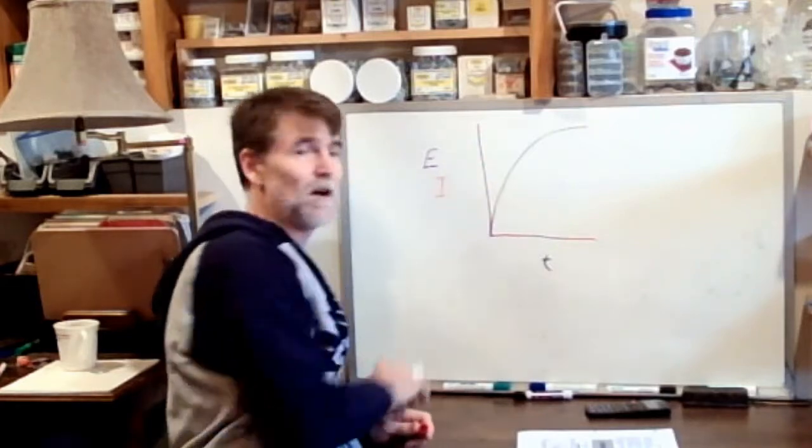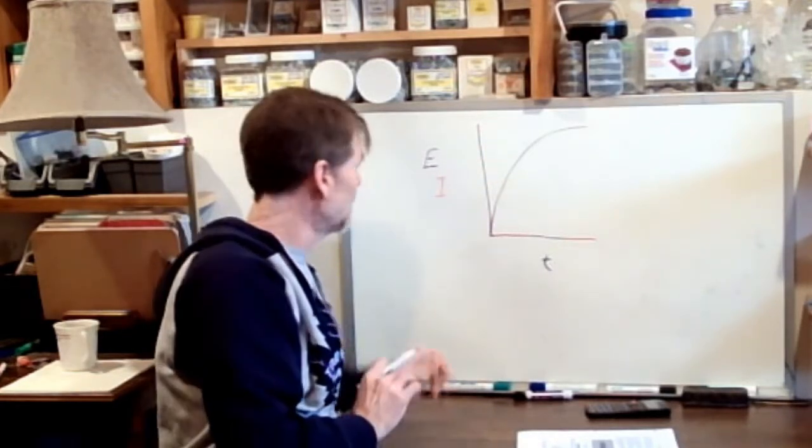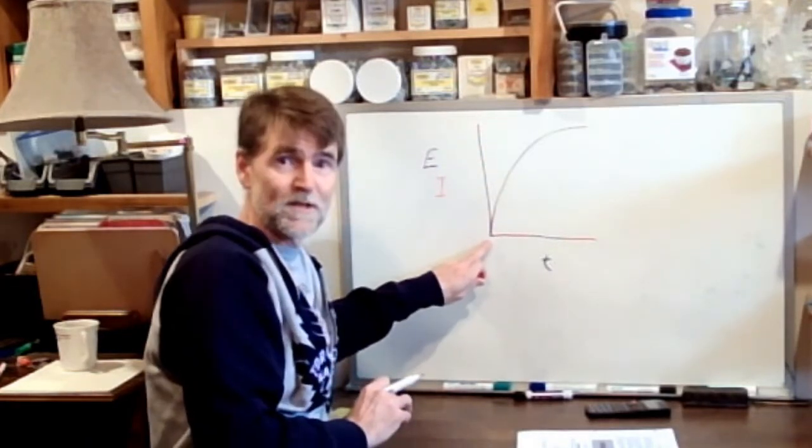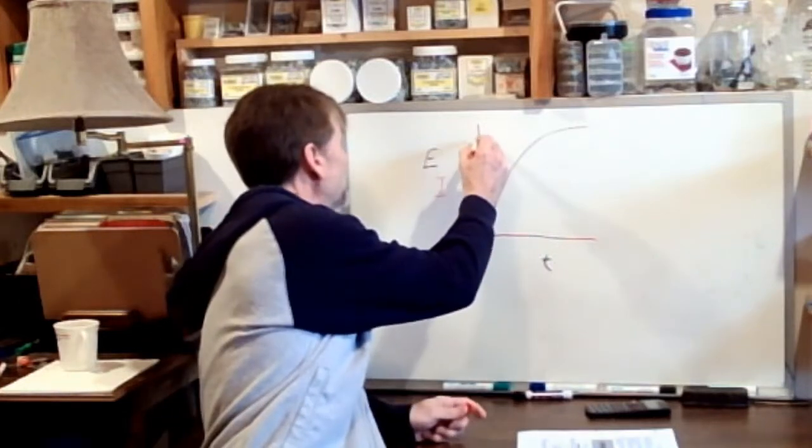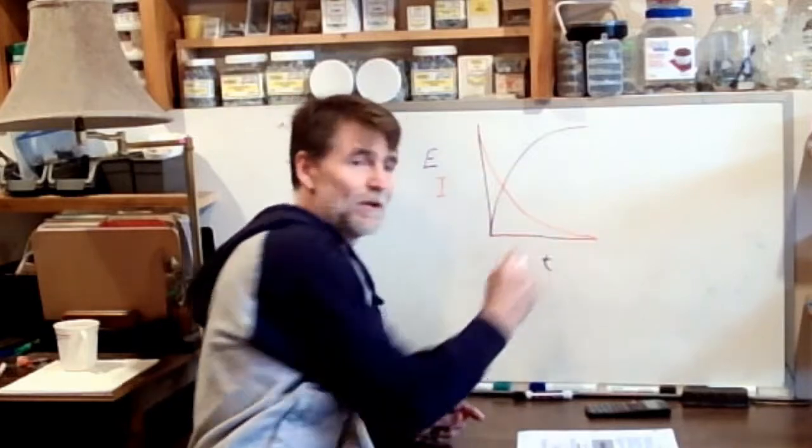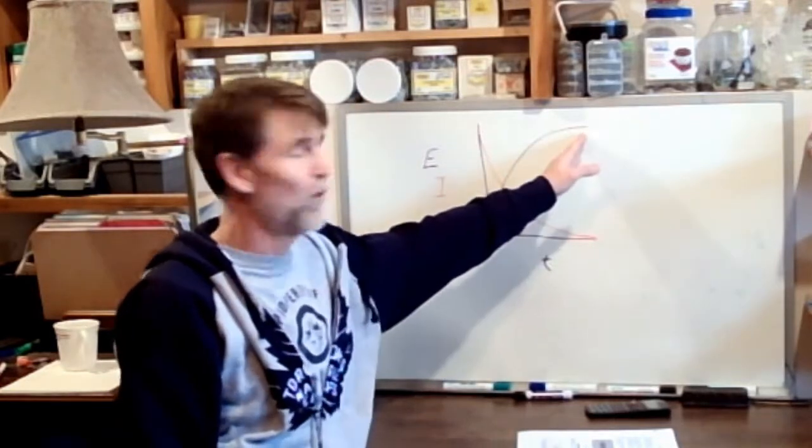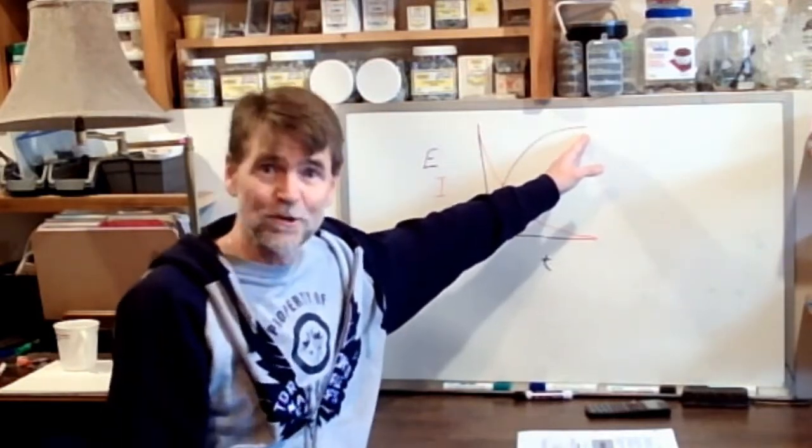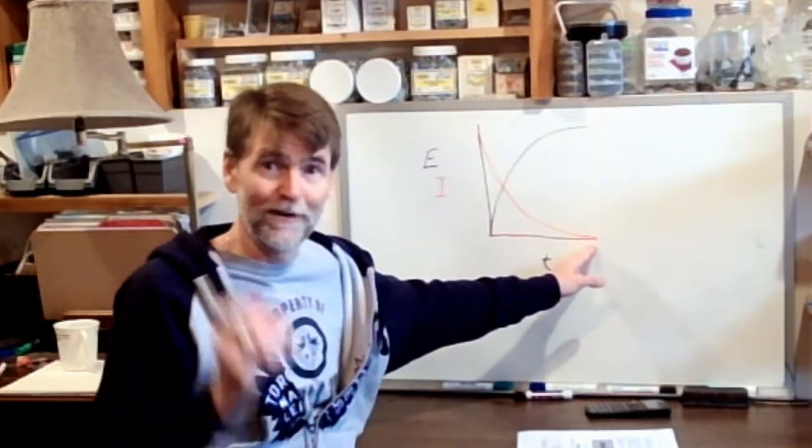If we plot current on this same graph, the moment that we close the switch we're going to have current in the circuit, and we're going to get a reduction in the amount of current in the circuit until we reach the point where we plateau. The capacitor is charged, there's no longer any current flowing.